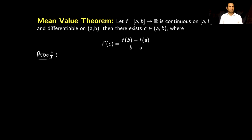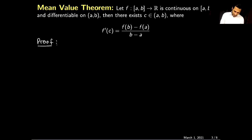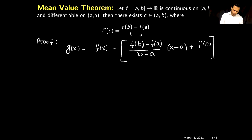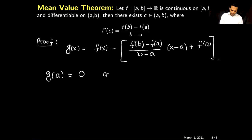To begin the proof, I will define a helper function g(x) = f(x) − [(f(b) − f(a)) / (b − a)] · (x − a) + f(a). Observe that if I plug in x = a, I get g(a) = 0, and also g(b) = 0. So the value of g at a equals the value of g at b.